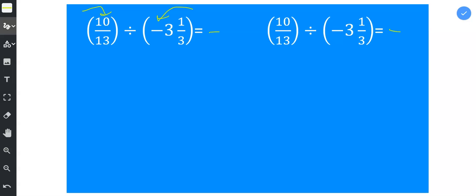Next, what I'm going to do is change this mixed number to an improper fraction. I will start by multiplying 3 times 3, and then I will add the numerator, 1, to get 10, and then you keep the denominator the same.